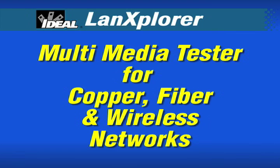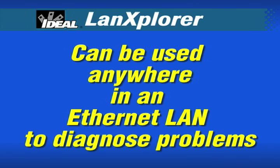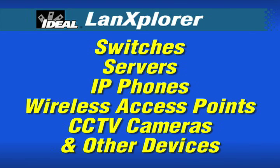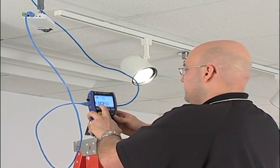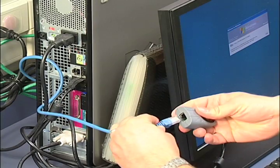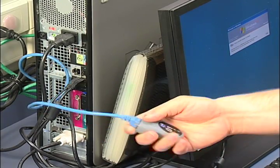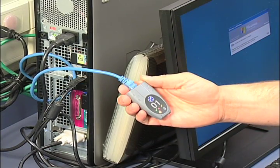The LAN Explorer PRO is a true multimedia tester for copper, fiber, and wireless networks. Its full gigabit capability allows it to be used anywhere in an Ethernet LAN to diagnose problems with switches, servers, IP phones, wireless access points, CCTV cameras, and any other Ethernet-enabled device. The LAN Explorer has excellent passive cable test functions for wire mapping and cable tracing because 70-80% of network faults stem from cabling issues.